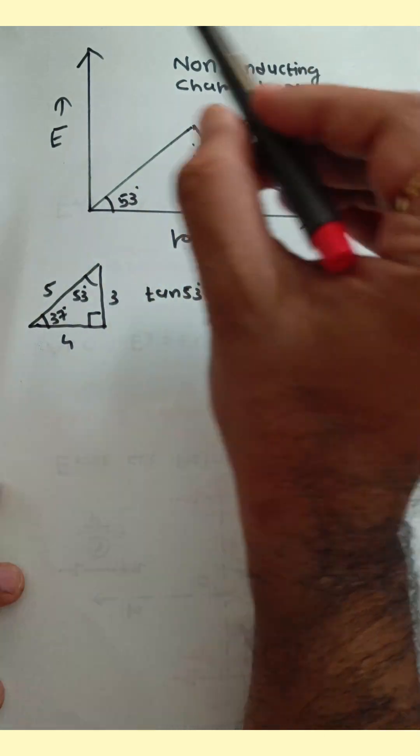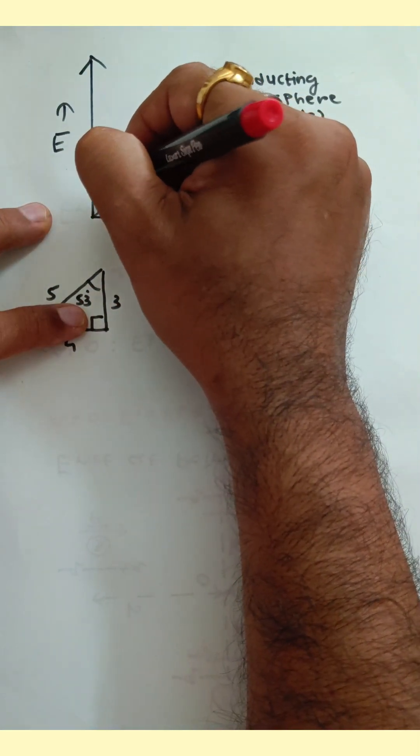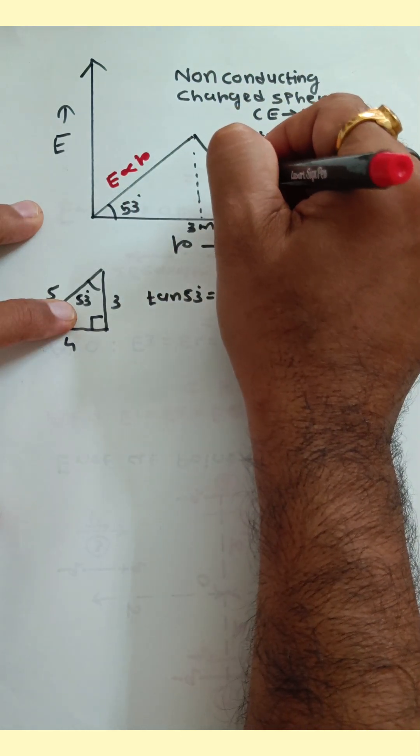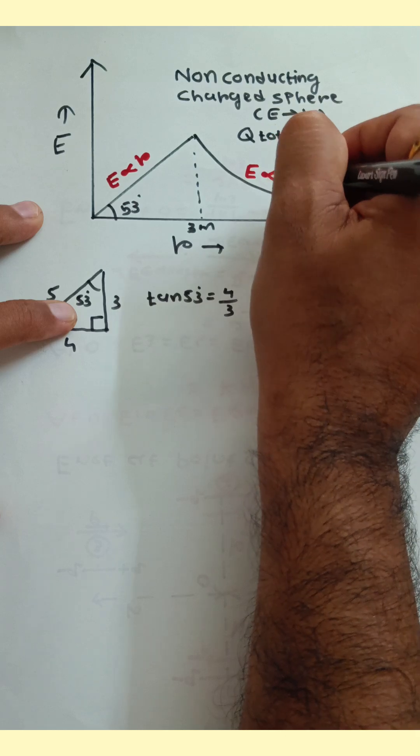For a non-conducting charged sphere, initially E is proportional to small r, where small r is the distance from the center. In the outside region, E is proportional to 1 upon R square.